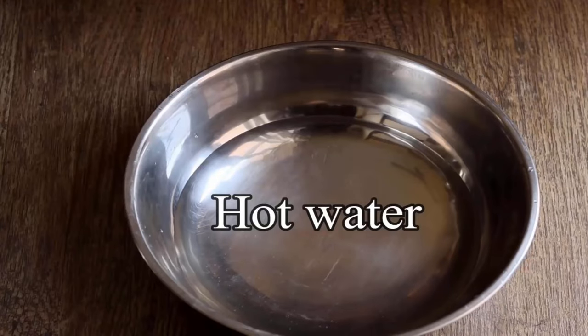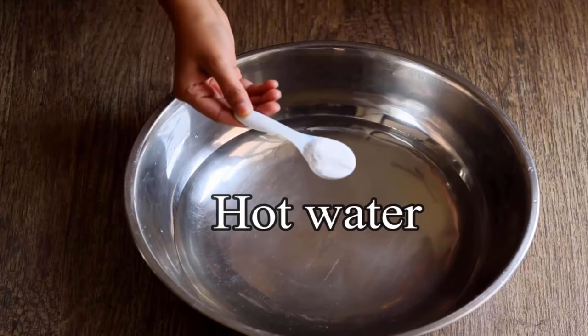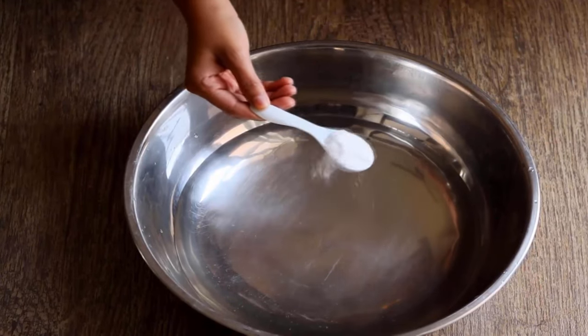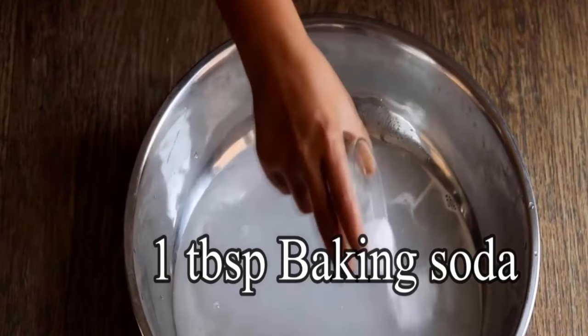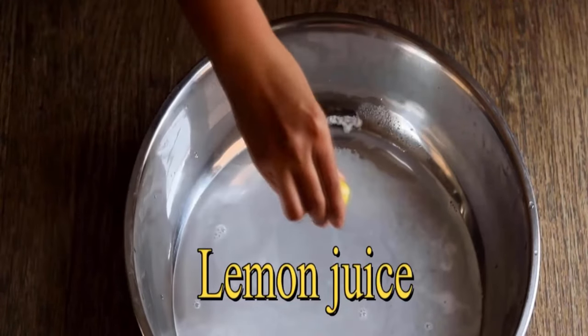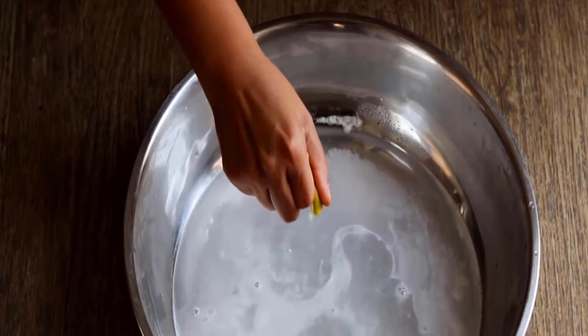For the first method, take hot water in a bowl. Add one tablespoon of any detergent powder. Then add one tablespoon of baking soda. Now take a lemon, cut it in half, and squeeze its juice into the water.